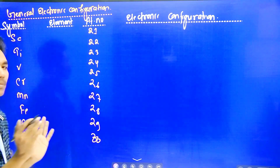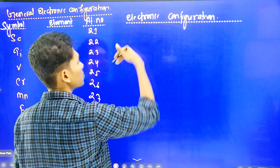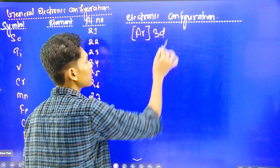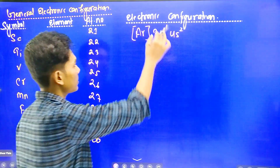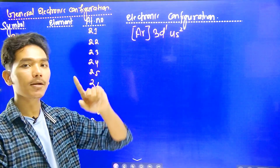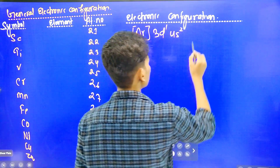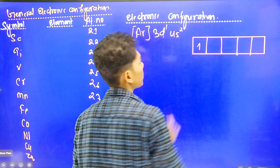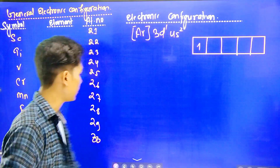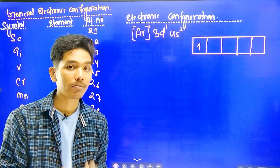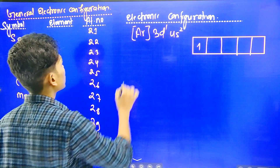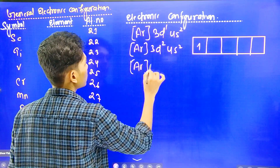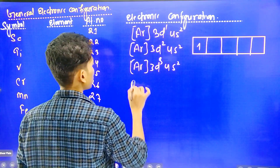Scandium has the configuration [Ar] 3D1 4S2, where Argon represents atomic number 18. The d-orbital is unpaired, so it is a transition element. Titanium is [Ar] 3D2 4S2, Vanadium is [Ar] 3D3 4S2, and Chromium is expected to be [Ar] 3D4 4S2. However, due to the stability of the half-filled configuration, the actual configuration of Chromium is [Ar] 3D5 4S1.